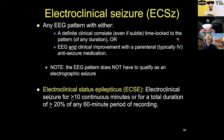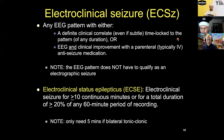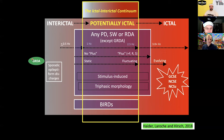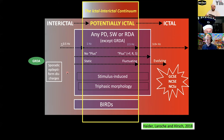For electroclinical status, the same definition applies: at least 10 continuous minutes or more than 20 percent of any hour. Caveat for convulsive status: you only need five minutes. So this is a diagram of the ictal-interictal continuum, going from interictal to ictal as you go from left to right. Generalized rhythmic delta activity has nothing to do with seizure — it's off the whole thing, the Pluto of the rhythmic and periodic patterns — no longer a planet.